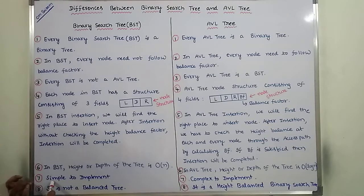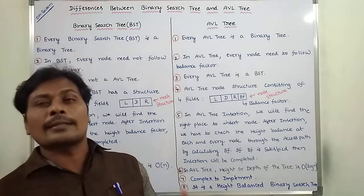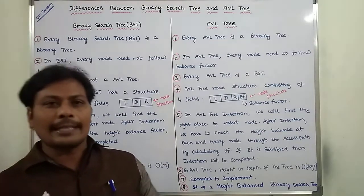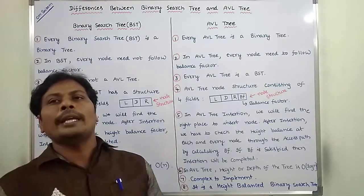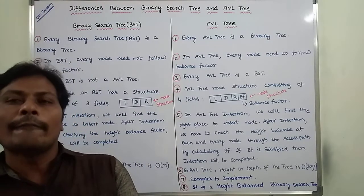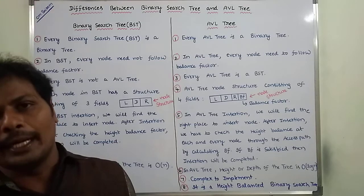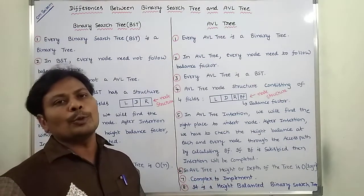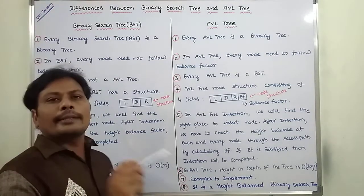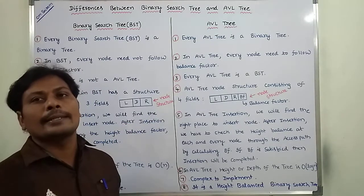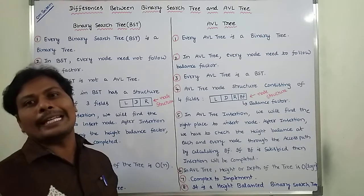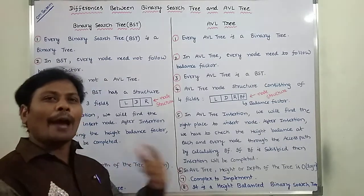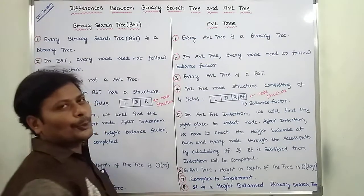Seventh point: a binary search tree is simple to implement because we only have to follow the BST property — if a value is less than the root, go left; if greater, go right; find the suitable place and insert. AVL tree is somewhat difficult to implement because after constructing the tree we must check the height balance, calculate balance factors for each node, and if the height is imbalanced we have to apply rotations. So it is somewhat complex to implement.